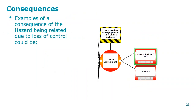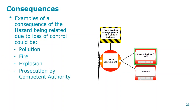Consequences could be pollution, fire, explosion, or prosecution by the competent authority — whoever is in charge of your process from the government's regulations, such as a factory inspector, who would prosecute you if you cause a major accident.